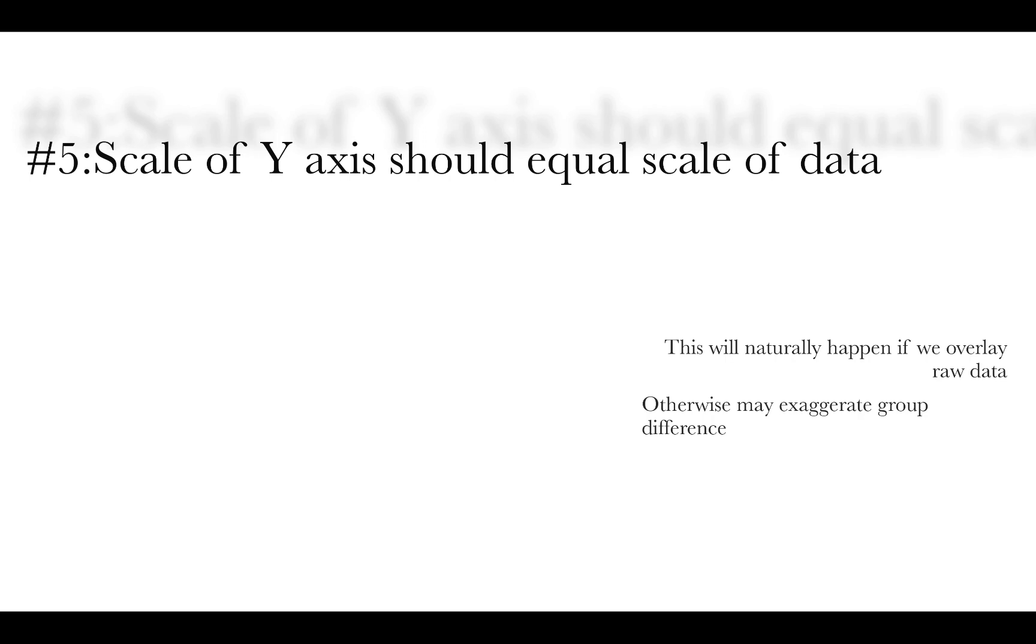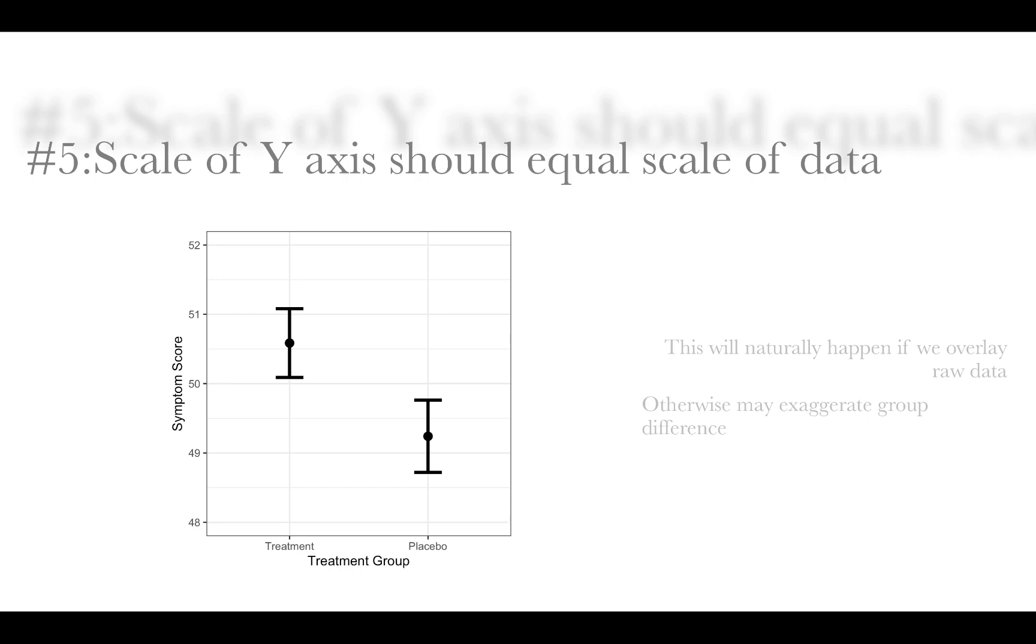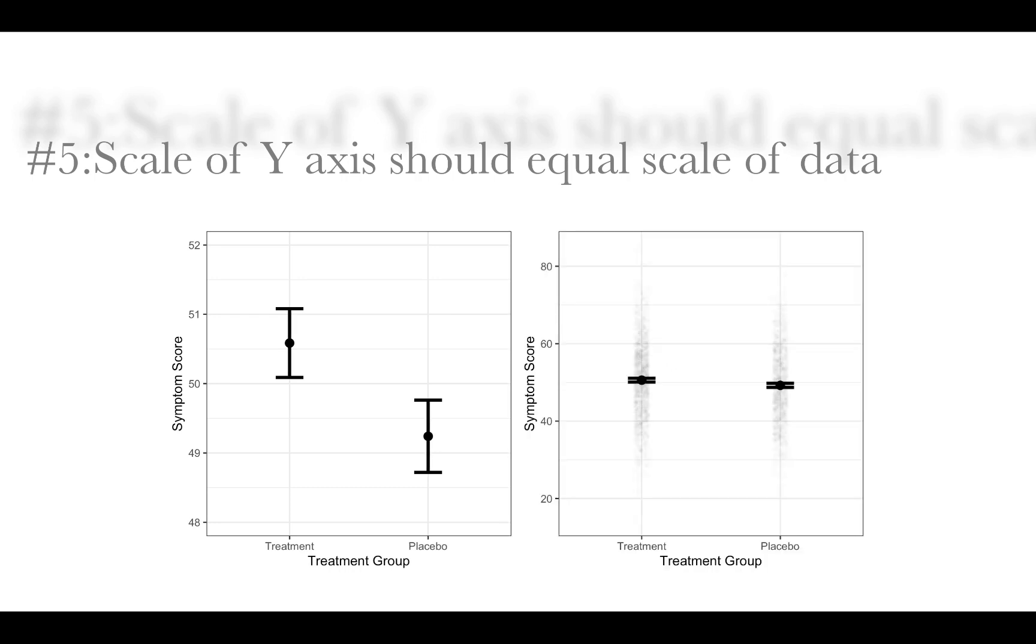Number five, the scale of the y-axis should equal the scale of the data. Now this will happen naturally if we overlay raw data. Otherwise, we may exaggerate group differences. So for example, here is a graph that looks like we have a pretty massive treatment effect. And yet, once we overlay the raw data, relative to the scale of the data, the difference is actually really tiny. So the graphic on the left is kind of misleading.